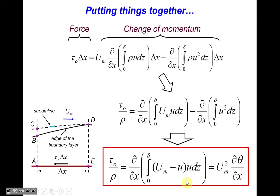This momentum integral equation was first derived by Theodore Kármán, a very influential engineer of the last century who introduced many important contributions to engineering. He is considered the father of defense science in the United States. He moved to the US in the 1930s when the Nazis came to power in Germany, and he developed an outstanding career in engineering and science, creating the theory of turbulence, designing aircraft and navy ships. He was a PhD student of Prandtl, who introduced the boundary layer concept.